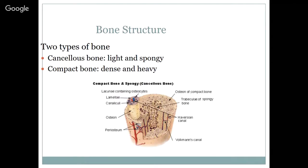There are two types of bone. There's cancellous bone, which is light and spongy, and compact bone, which is dense and heavy. In the center is that cancellous bone; on the outside of the cortex is your compact bone. Within the rings, those are called lamellae, and there are little canaliculi within those lamellae. These lacunae contain the osteocytes or the bone cells. Each one of these ring structures is called an osteon, and they are formed in tubes that travel the length of the bone.